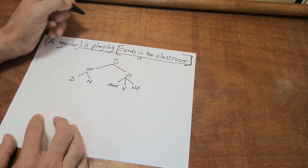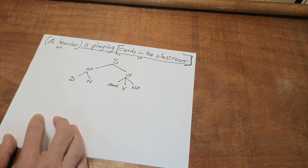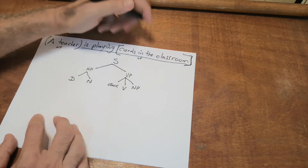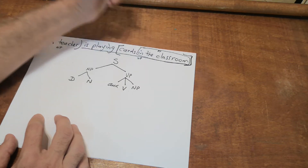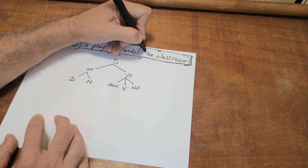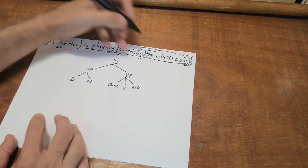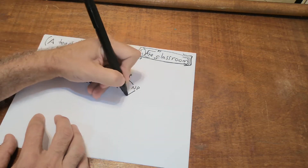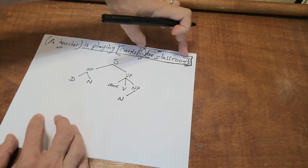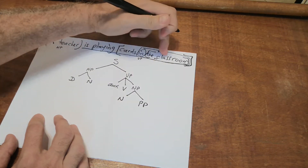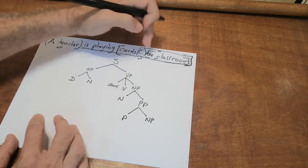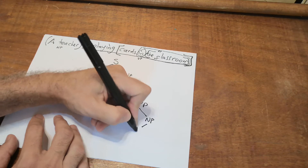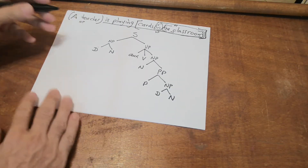This is a noun phrase — 'cards' is the noun, the most important word here. If we look carefully, we can see that inside this noun phrase there is another phrase. What do we call this phrase? It's a prepositional phrase. The prepositional phrase has a preposition and another phrase — a noun phrase. So the noun phrase has a noun 'cards' plus a prepositional phrase. The prepositional phrase has a preposition and another noun phrase, which has a determiner 'that' and a noun 'classroom.'